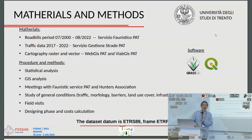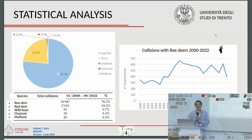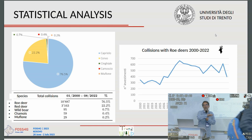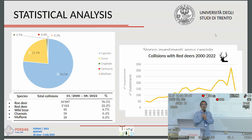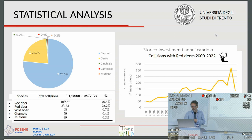Looking at the statistical analysis, collisions from 2000 to 2022 are becoming more and more frequent. Roe deer are the smaller ungulates and they are the most commonly involved, but comparing with red deer, we also see more collisions with red deer in recent years. The larger numbers of both roe deer and red deer show the phenomenon is becoming more important and worrisome.